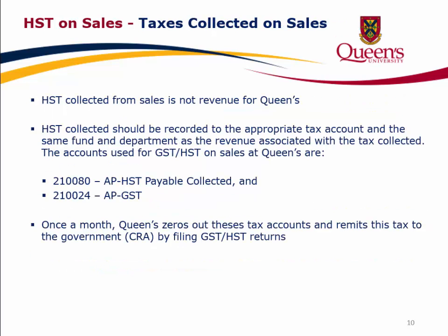HST collected from sales is not revenue for Queen's. HST collected should be recorded to the appropriate tax account in the same fund and department as the revenue associated with the tax collected. The accounts used for GST/HST on sales at Queen's are Account 21080 (AP HST payable collected) and Account 21024 (AP GST account). Once a month, Queen's zeros out these tax accounts and remits this tax to the Government of Canada Revenue Agency.